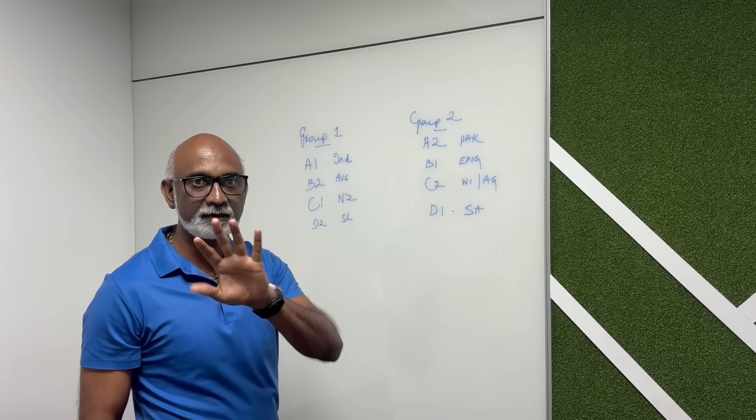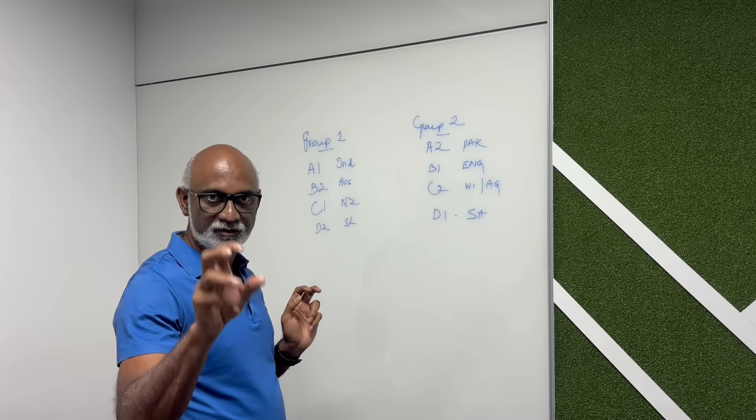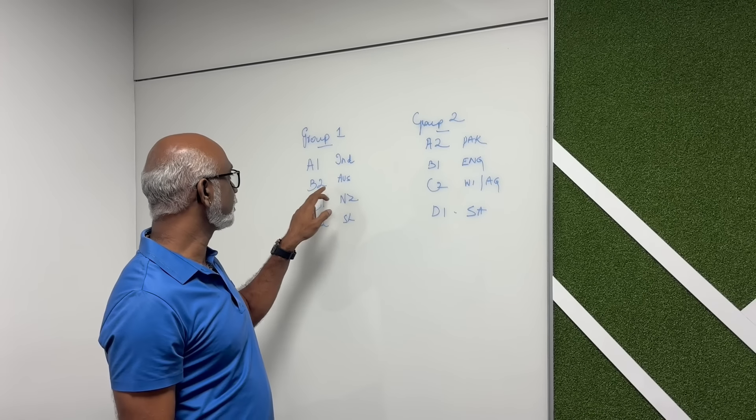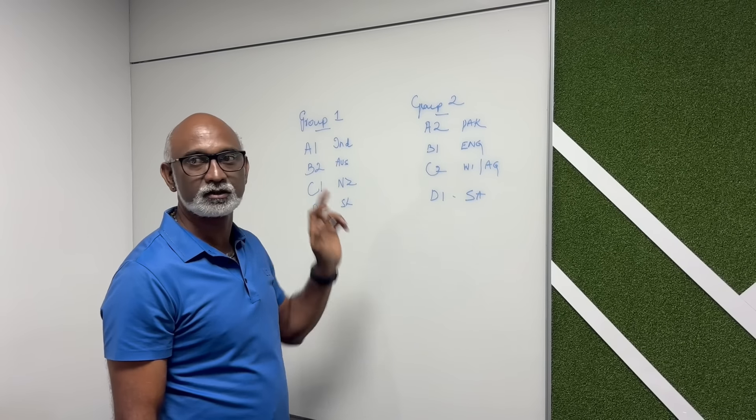This group is a smaller group. For example, if you look at the first group with England and Australia, you would call Australia B2 and England B1, so they would be bifurcated.